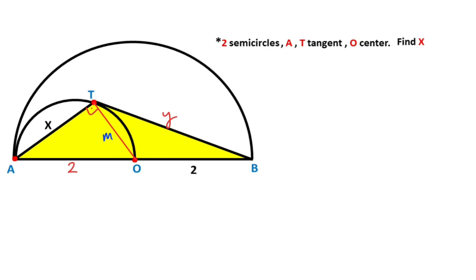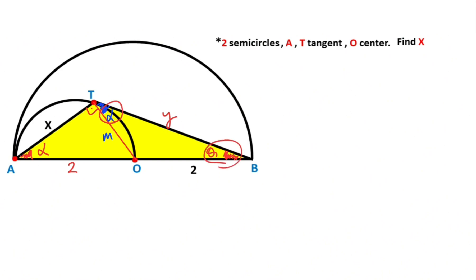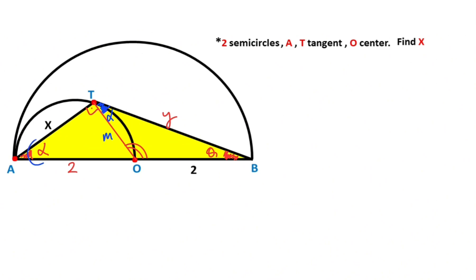If you focus here, let's call this angle alpha. Notice that this arc must be equal to alpha, meaning angle OAT is equal to alpha. Next, let's call this angle theta. If you focus on this triangle, it has angles alpha, theta, and a third angle — let's mark it with a double line. If you focus on the biggest triangle, it has the same two angles alpha and theta, so the third angle of the biggest triangle must also equal the double-line angle.